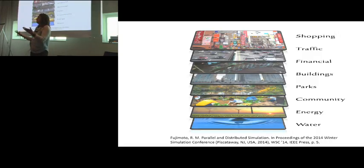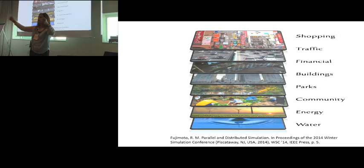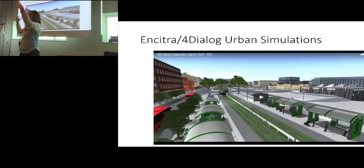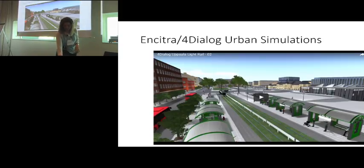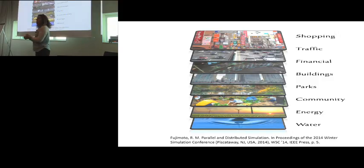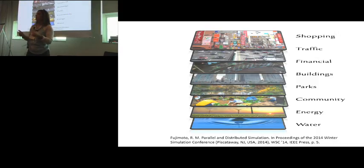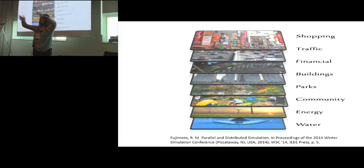Cities are easy to understand because everybody knows what a city is and has an intuitive feeling for how you would simulate one. There's traffic simulation, buildings, pedestrians, environmental issues, energy distribution, and weather that influences everything else. Basically there's an open-ended number of what I call aspects of the city — this ties back to my old work on aspect-oriented programming. These aspects are all interrelated; they are fairly independent but not completely, because ultimately you are working over the same state.